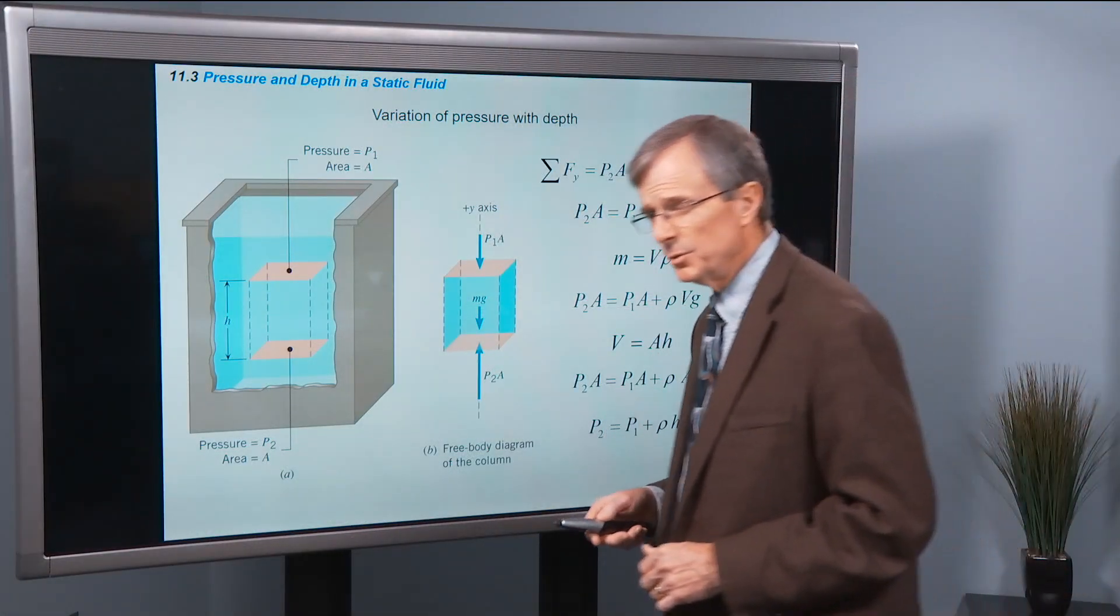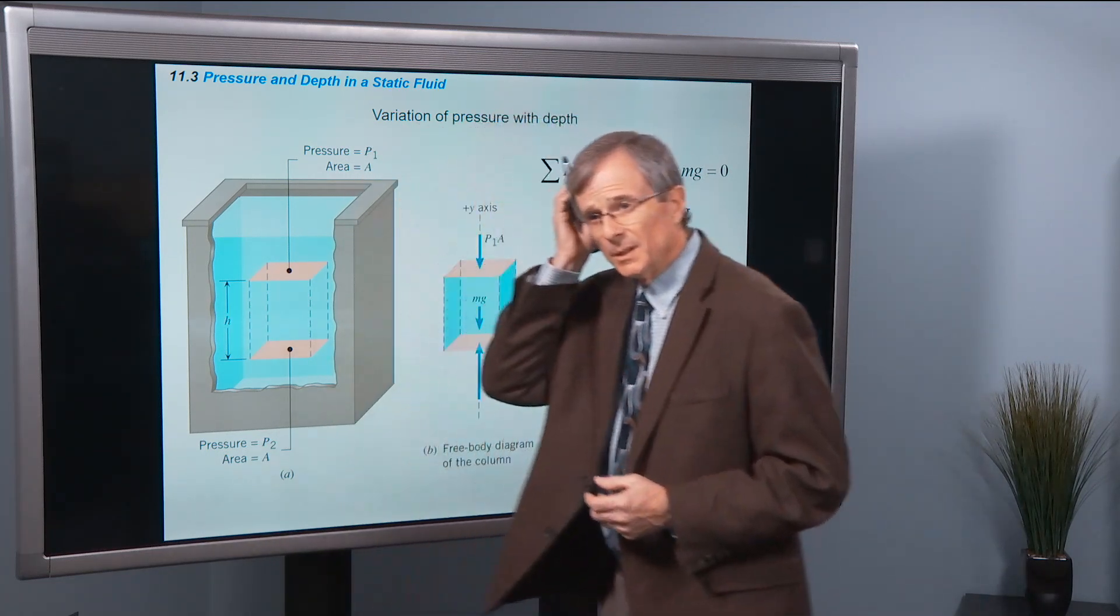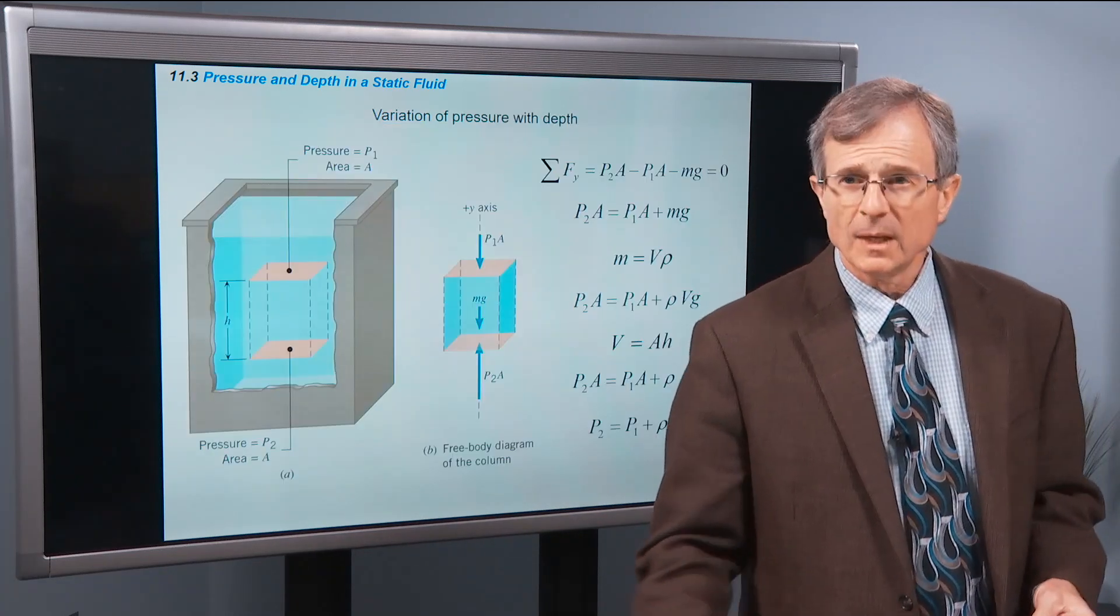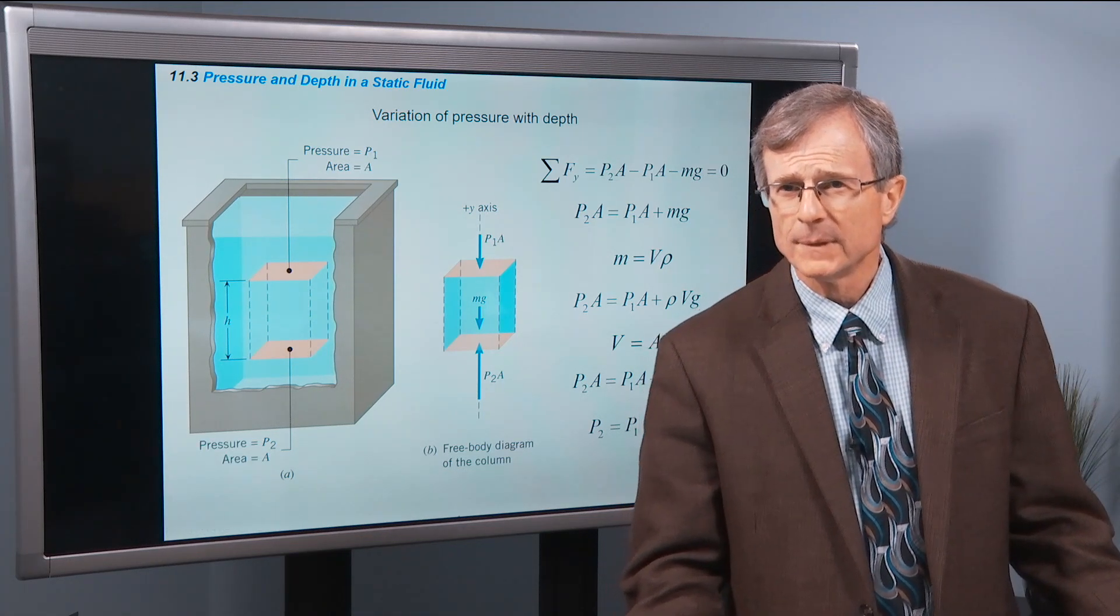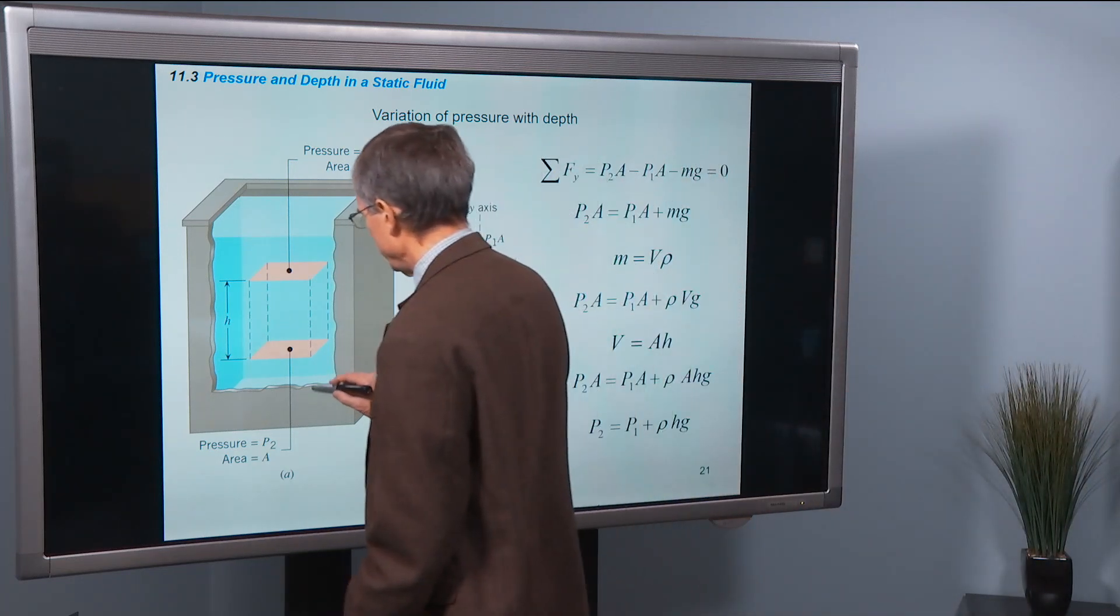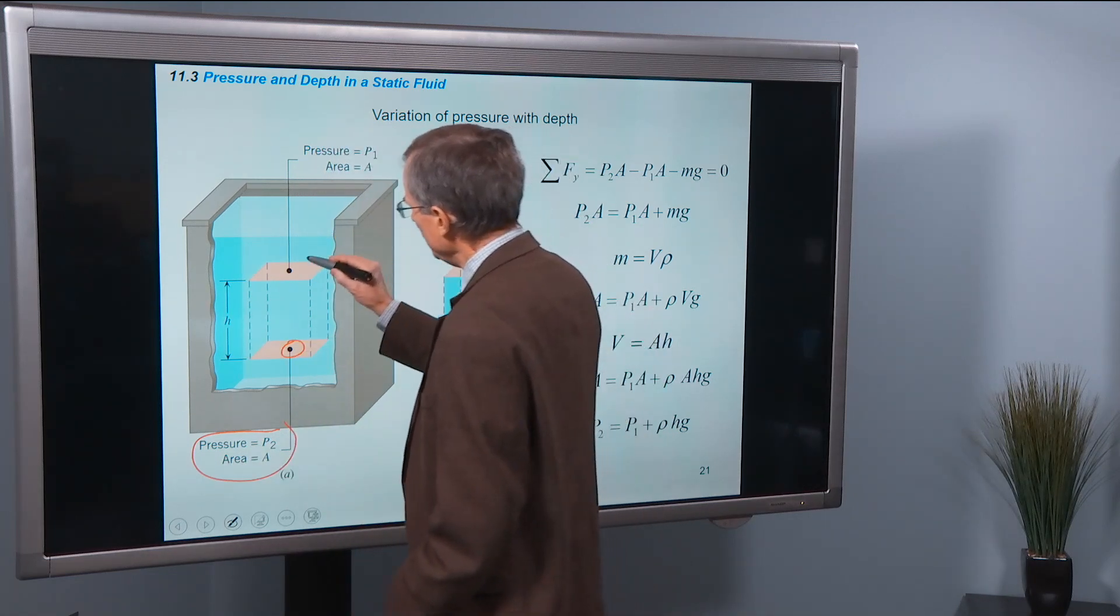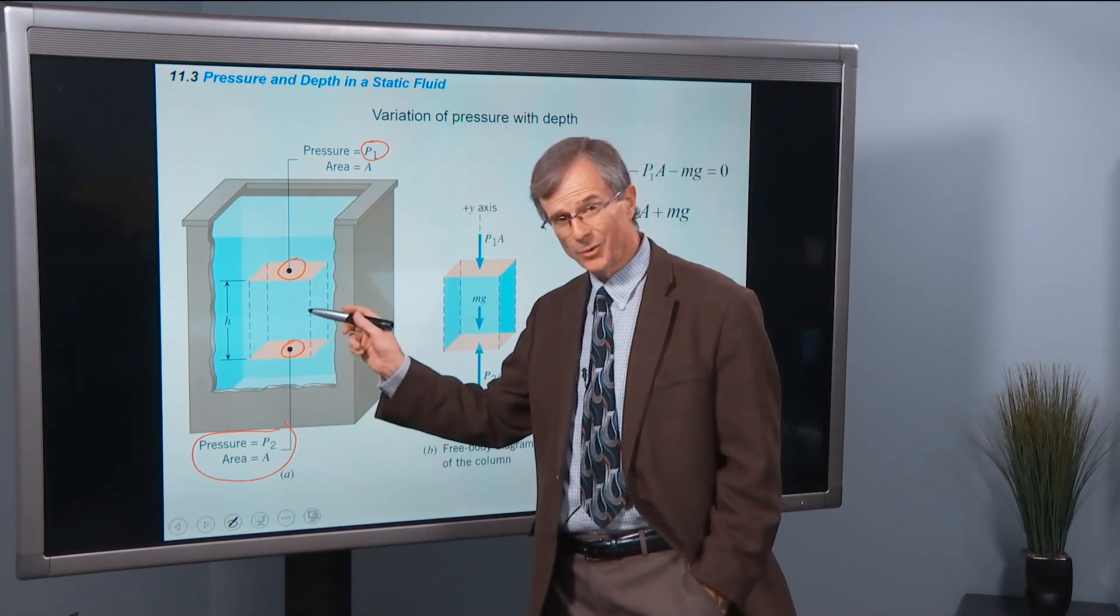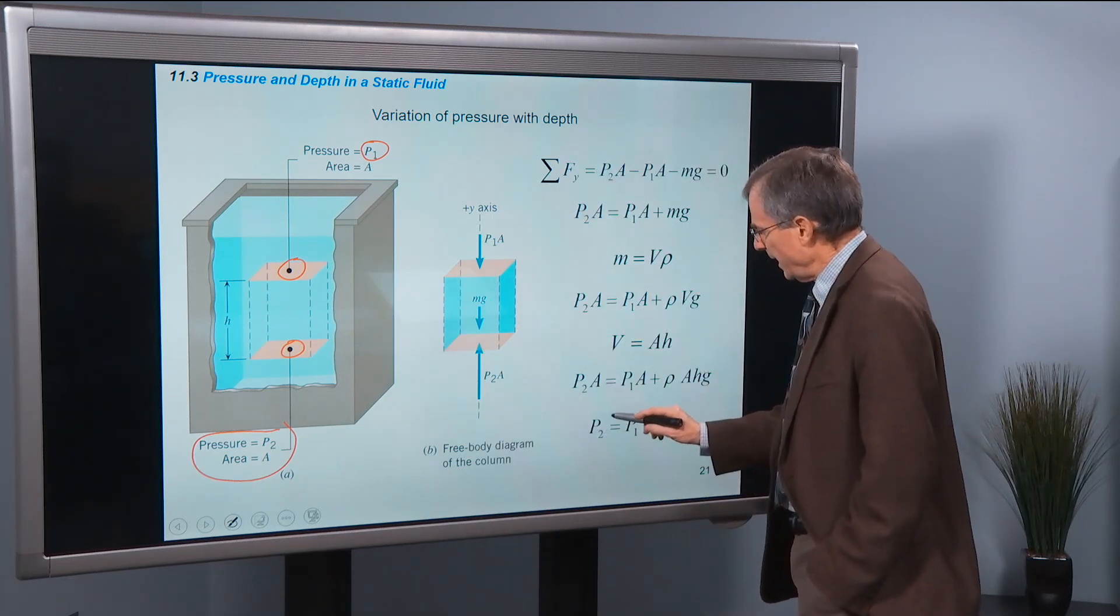Now we're going to actually derive the equation that I talked about in the demo, which is this equation here. The pressure at a lower position, so down here, pressure P2 down here, pressure P1 up here. How are they related? Well, P2 had better be greater than P1. We saw it in the demo, and you're familiar with that too. And sure enough, it is.